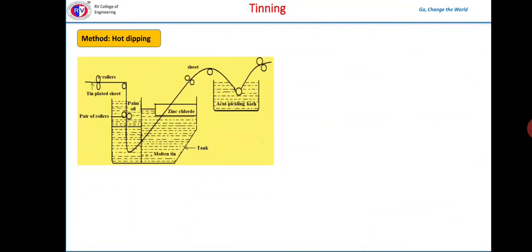Now we will discuss tinning method. Tinning is a process of coating tin on iron by hot dipping method. Tinning of mild steel is done mostly for the requirements for foodstuff industry, like in the manufacture of cans, containers for storing ghee, foodstuffs, oils.